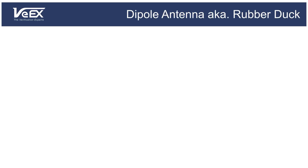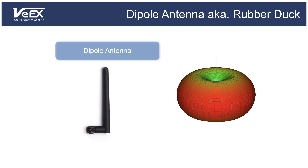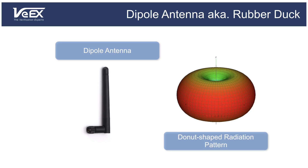The most common type of omni antenna is the dipole, also called a rubber duck antenna, which is standard on many Wi-Fi access points. This antenna radiates energy out perpendicular to the antenna in a donut-shaped 3D pattern with the antenna in the center.